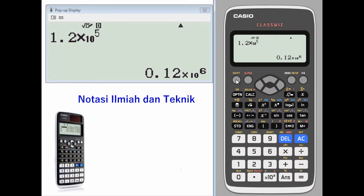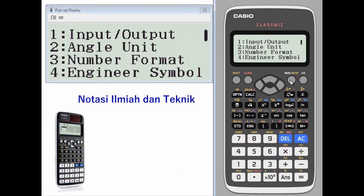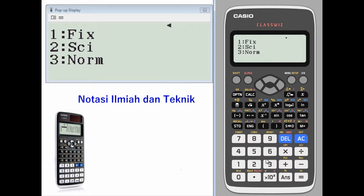Another place you can set this is in the setup, under number format. Change it to scientific, and you can select between 0 and 9 leading decimals. We'll go with 2.